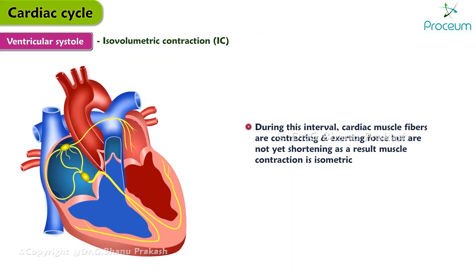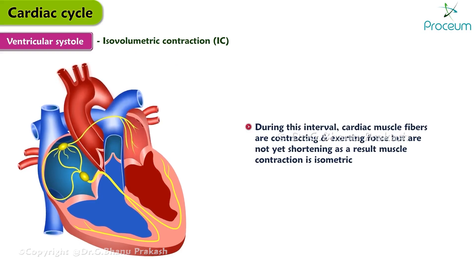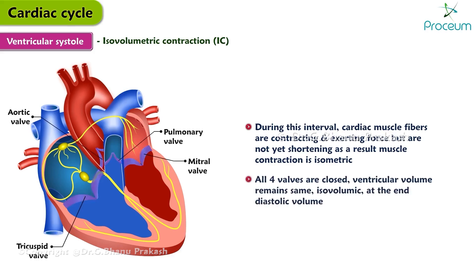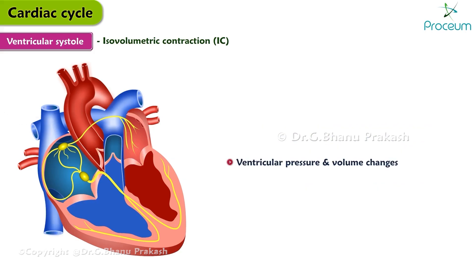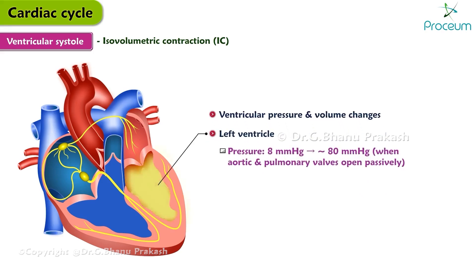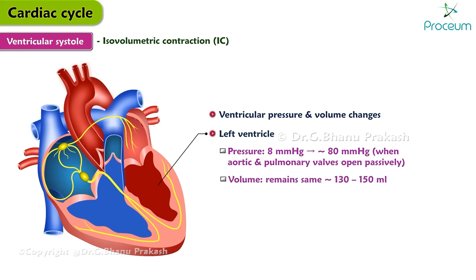During this interval, cardiac muscle fibers are contracting and exerting force but not yet shortening; the contraction is isometric, meaning muscle length remains the same. Because all four valves are closed, ventricular volume remains the same — isovolumic — at the end-diastolic volume. Left ventricular pressure increases from about 8 mmHg to roughly 80 mmHg when the aortic and pulmonary valves open passively. Left ventricular volume remains constant at about 130–150 mL. This is the period of highest oxygen consumption.